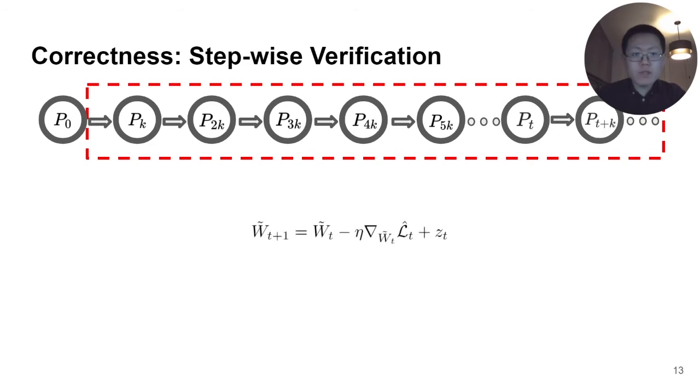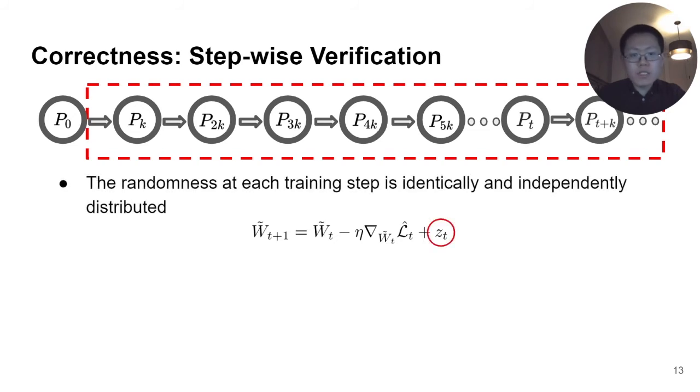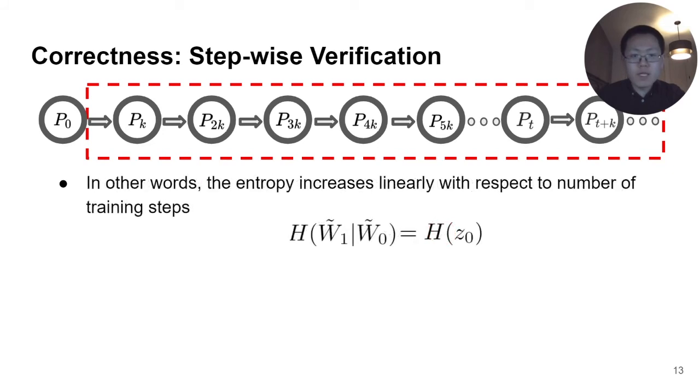We use what we call the stepwise verification for this part. In high-level, we verify the proof by reproducing the training and see if we get the same final model. I will describe this in detail and motivate why it is correct and also necessary. Gradient descent is Markov. As shown in the equation, to perform a gradient descent, only the previous set of model parameters is needed. Most operations from frequently used machine learning libraries, such as TensorFlow and PyTorch, are non-deterministic, so there is some randomness at each step of gradient descent, denoted by z in the equation, and this randomness is IID distributed during training.